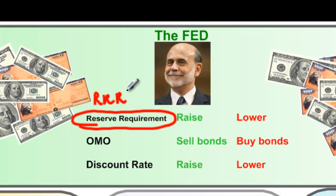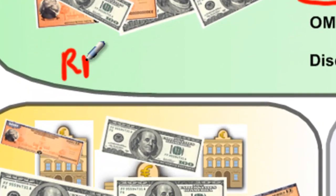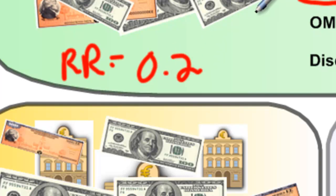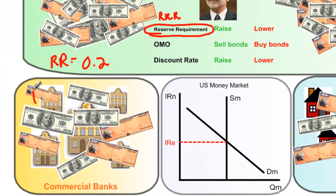Let's do an actual example. If a commercial bank has total deposits equaling $1 billion — in other words, households have saved $1 billion at that bank — and the reserve requirement equals 0.2, this tells us that 20% of that billion dollars must be kept on reserve at the Fed. So $200 million would be kept in reserve at the Fed.